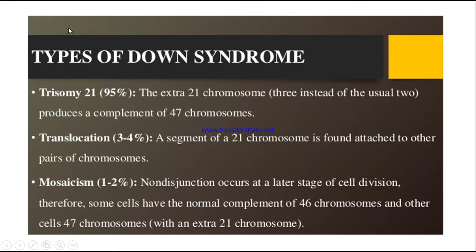There are 3 types of Down syndrome. First is Trisomy 21, which accounts for 95% of cases. Here the extra 21st chromosome — 3 instead of the usual 2 — produces a complement of 47 chromosomes instead of the normal 46.